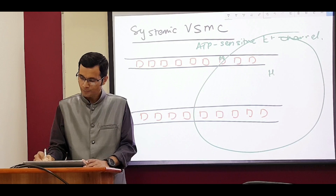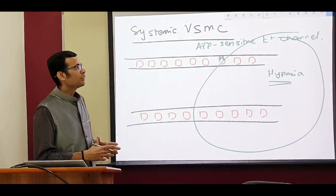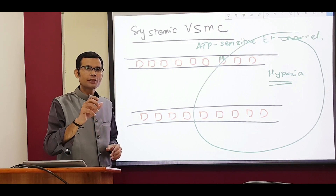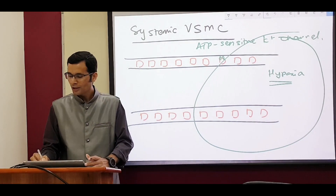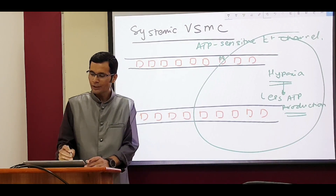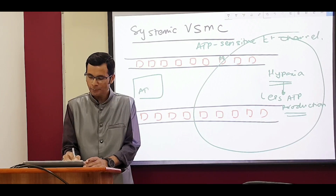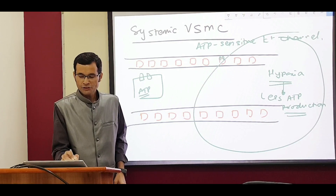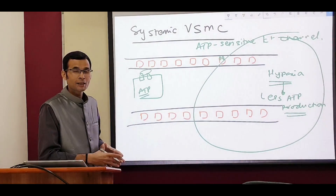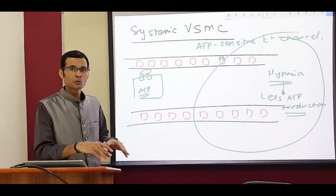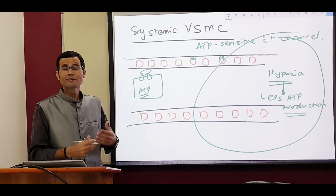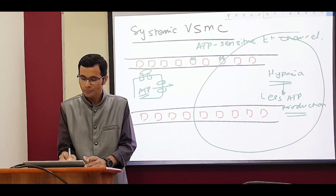If there is hypoxia in this region, hypoxia will generate less ATP. These channels and their functioning are related to energy metabolism and energy production. So hypoxia means less ATP production. The ATP-sensitive potassium channel works like this: when it senses ATP inside the cell, the channel will close. But here, because of hypoxia, there is less ATP production, so this channel cannot close — it remains open.